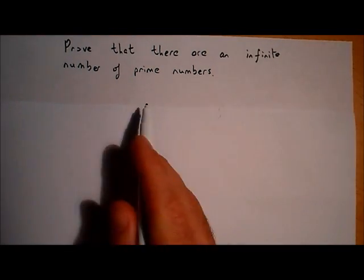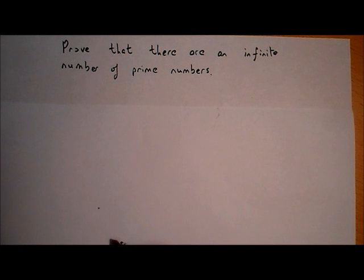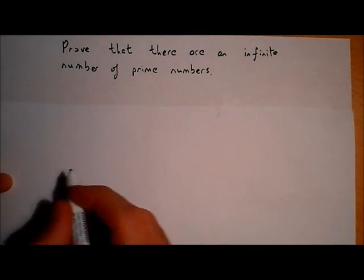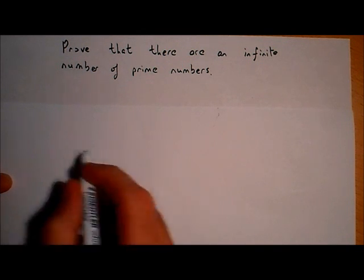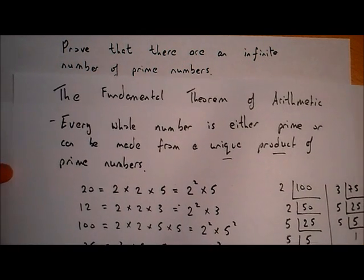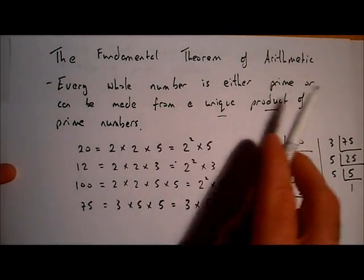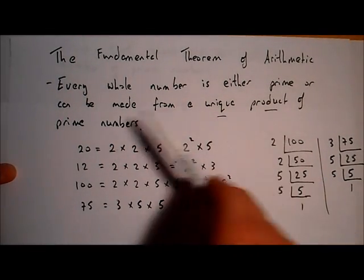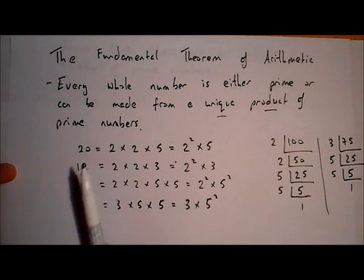We're going to prove that there's an infinite amount of prime numbers. Before we prove that, let's have a look at the main idea we're going to use in that proof. The fundamental theorem of arithmetic says that every whole number is either prime or can be made from a unique product of prime numbers.